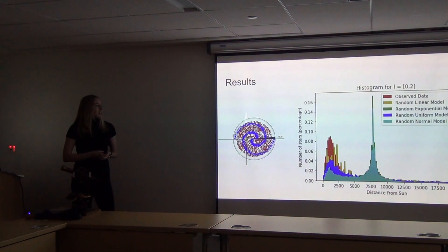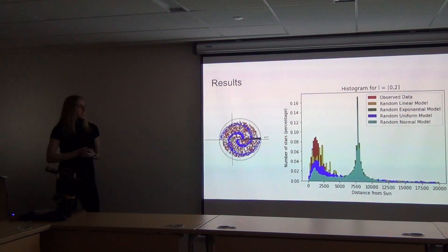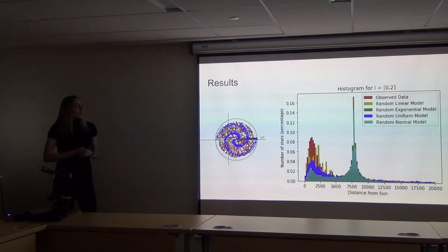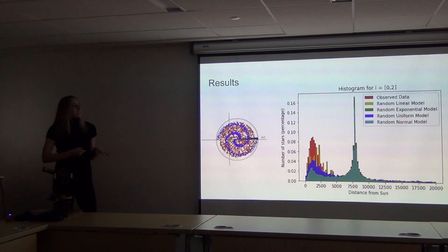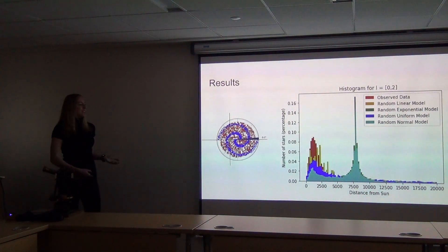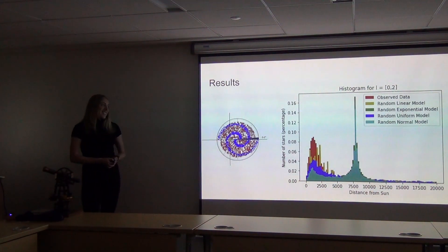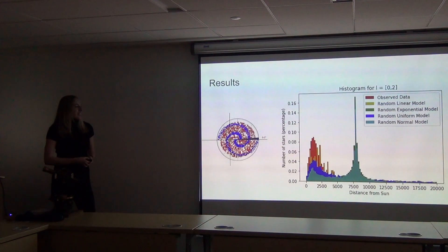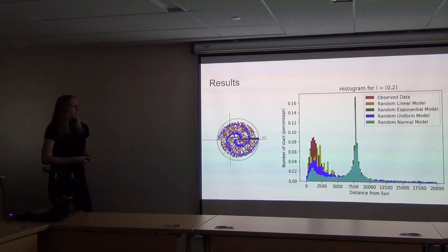These are results for looking towards the galactic center. As you can see, the red is the observed data, and our model functions are the different colors. And none of them describe observations very well. And you can see that peak at 8,000 parsecs that our models predict, but Gaia did not see, which is kind of interesting.